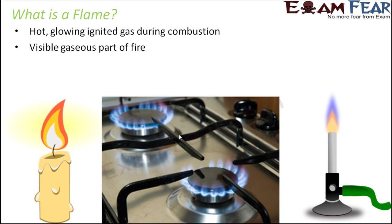If you look at the flames from different objects — the candle flame, the LPG flame, or the Bunsen burner flame — they all look quite different from each other. The Bunsen burner flame is more bluish in color, the candle flame is more yellowish or orangish, and the LPG flame on your gas oven is also a little bluish in color. So the color and structure of the flame varies from one object to another.